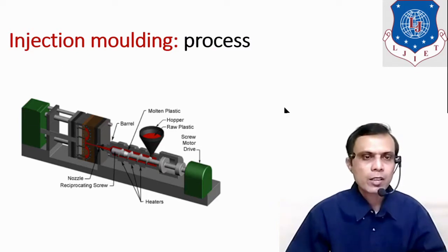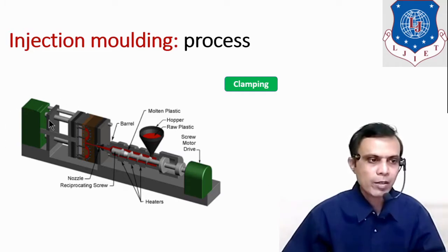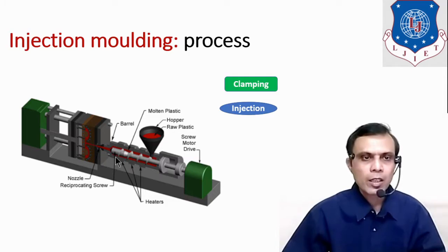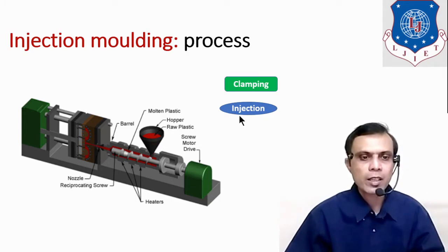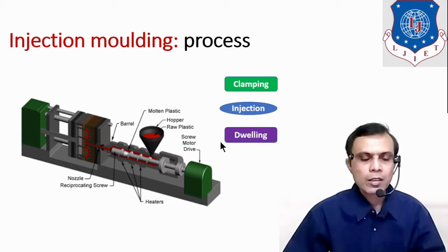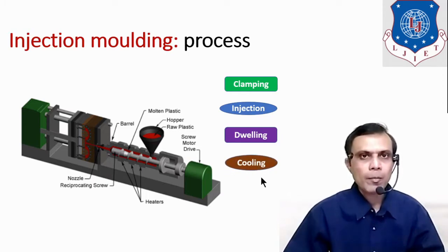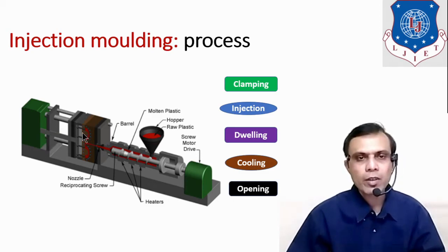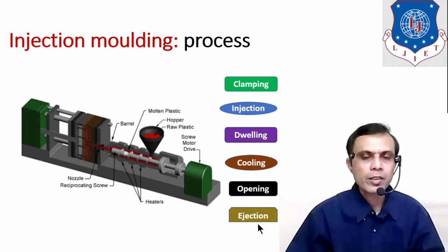Now let's see the process step by step. The first step is clamping — by operating the clamping unit, all the plates are set in position. The next step is injection, where molten plastic enters the mould cavity through the nozzle. Then comes the dwelling step, during which pressure is built up to fill the die cavity properly. After that is the cooling stage, where the part cools down and solidifies. Then the dies are opened, and the final step is ejection of the moulded part.